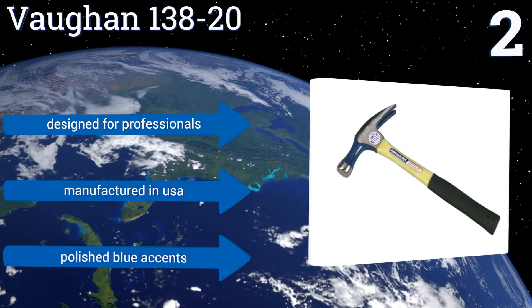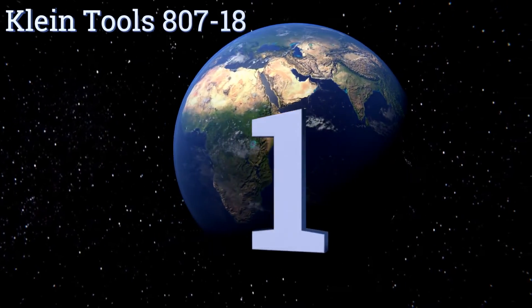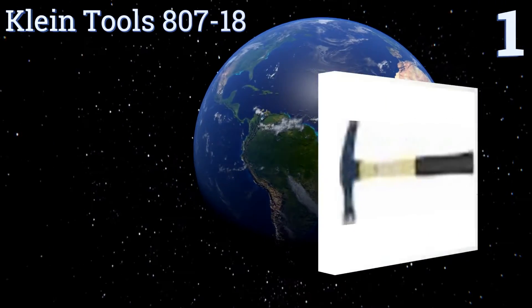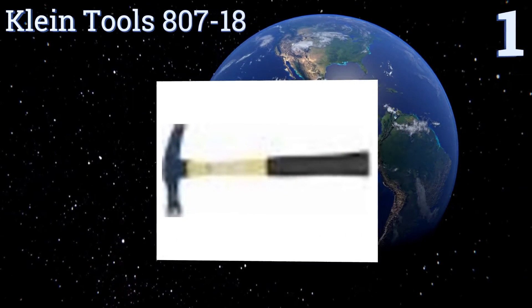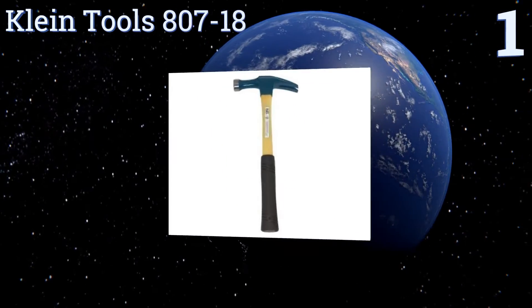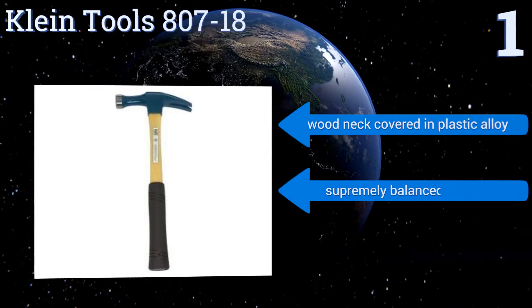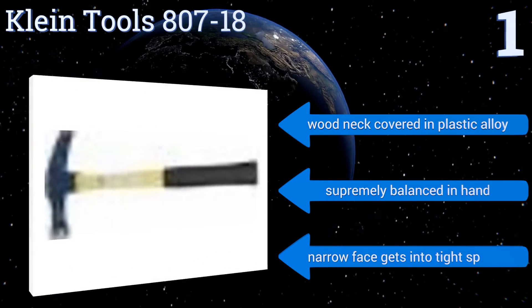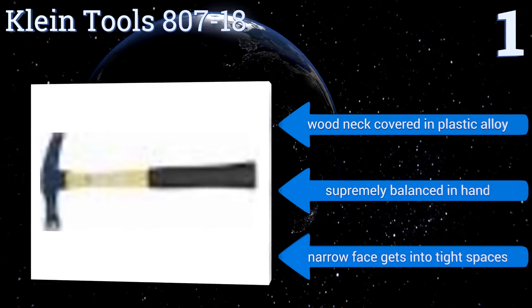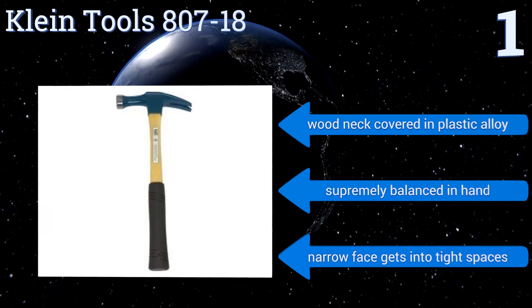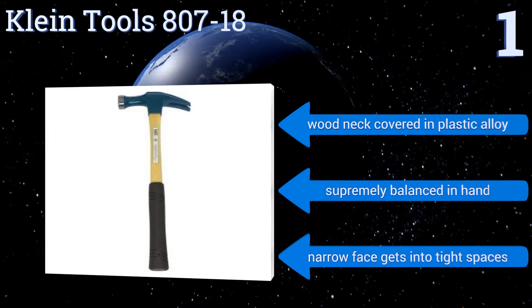And coming in at number one on our list, continuing the same basic design that the company popularized in the late 1800s, the Klein Tools 807-18 is a classic unit that will get the job done and then some. Its winning feature is an extra long nose that makes it perfect for installing gang boxes and wall wiring. It boasts a wood neck covered in plastic alloy and a narrow face that gets into tight spaces. It's supremely balanced in the hand.